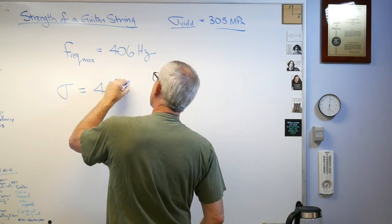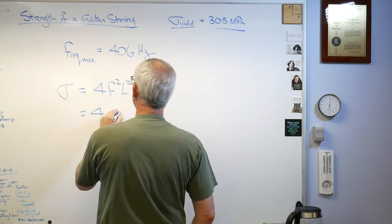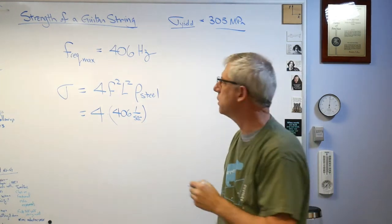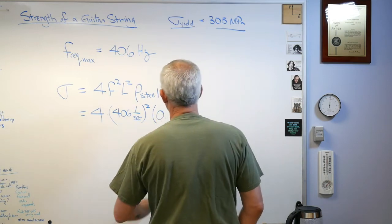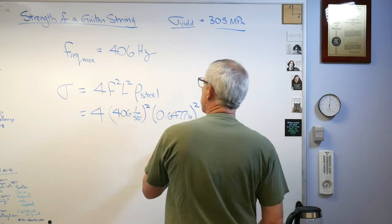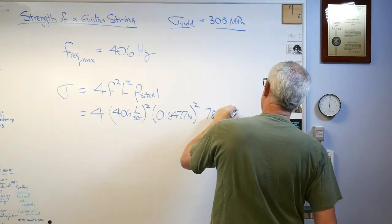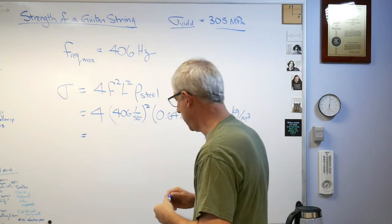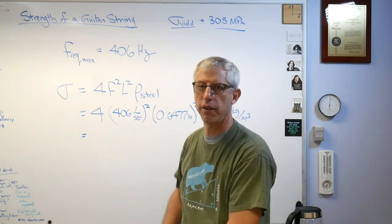σ = 4f²L²ρ_steel. So 4 times 406 hertz squared (and hertz is actually cycles per second, so for our purposes here it comes out 1 over seconds) times 0.6477 meters squared times 7850 kilograms per meter cubed. That looks pretty good. Because I just found that number just now and I haven't run those numbers at all, I'm going to step out of frame and I am going to let the whiteboard fairy take care of that number for me.